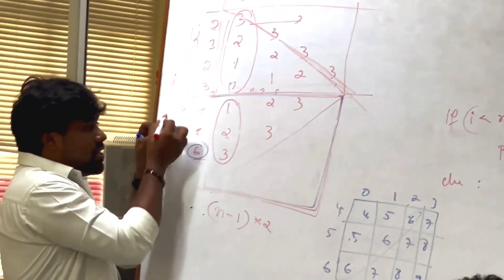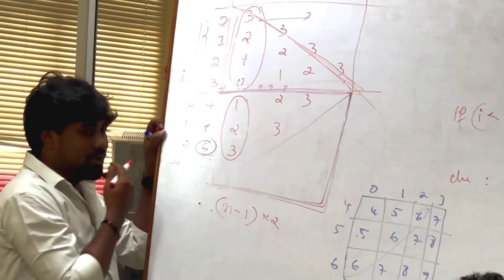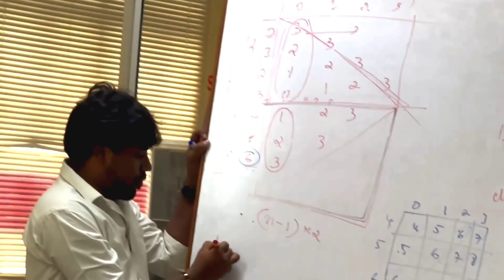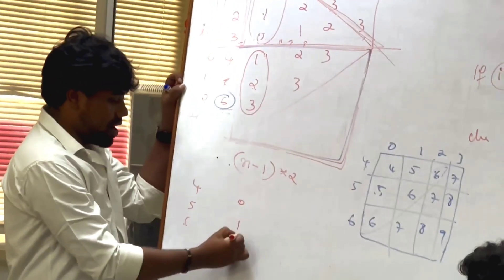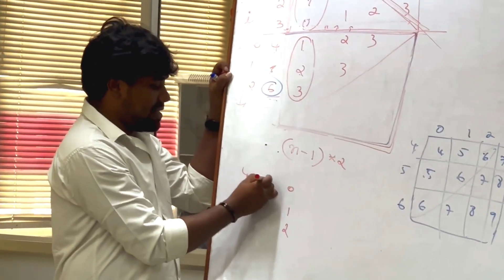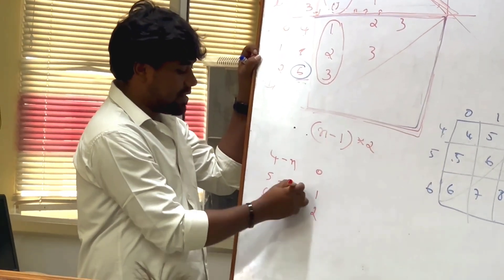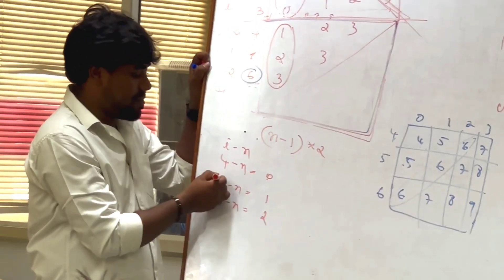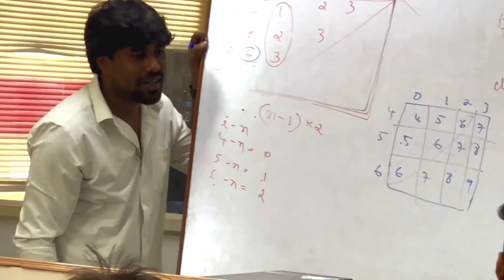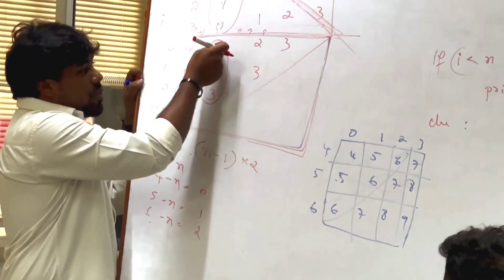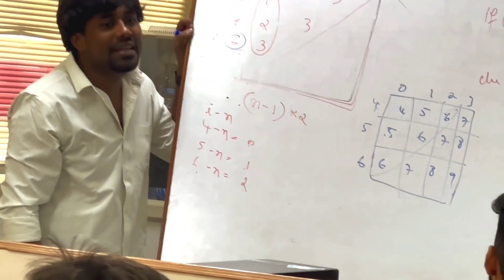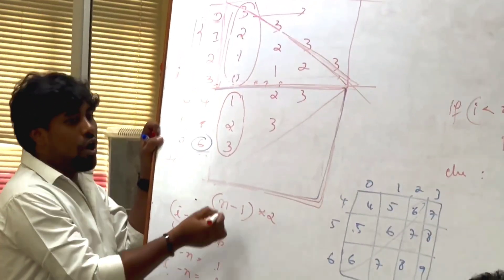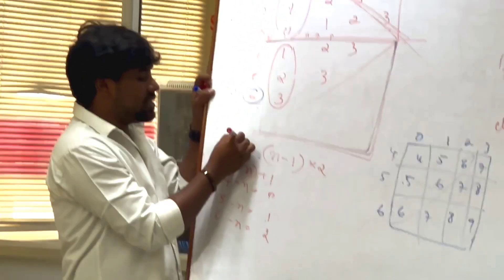When it is 4, can I get 0? When it is 5, can I get 1? When it is 6, can I get 2? i minus n: i is 4, 4 minus 4 is 0. i minus n gives 0, 1, 2. If I get 0, 1, 2, 3 — is it difficult to get 1, 2, 3? For the same equation, I can do plus 1 also. So either i minus n plus 1, or i minus n minus 1 also — both are the same equation.